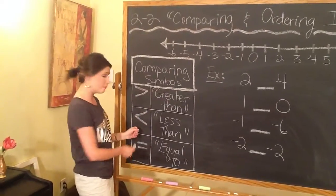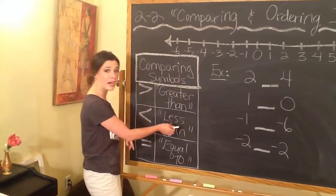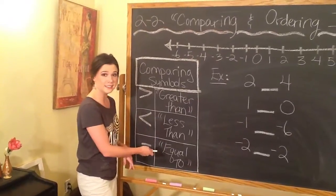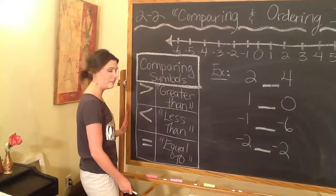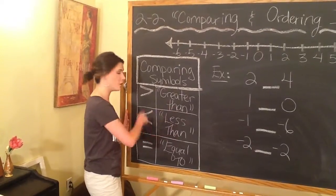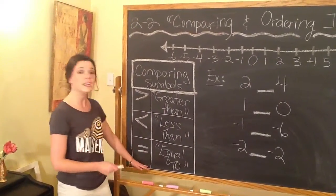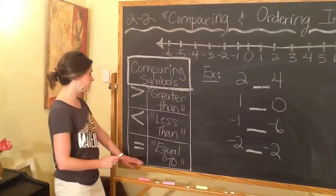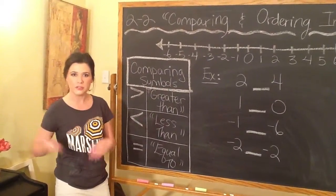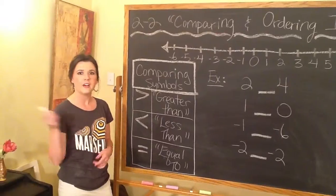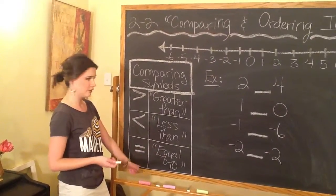If you use this symbol that is open to the right, this is the less than symbol, because it's saying that the number to the left is smaller than the number to the right. And the last symbol you're very familiar with is the equal to symbol. Anytime the numbers are the same — 2 equals 2, 3 equals 3, 500 equals 500 — that's when you use the equal sign.